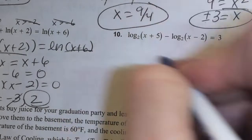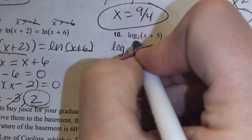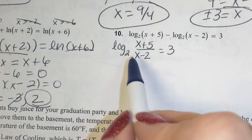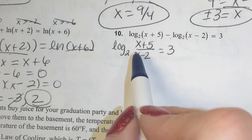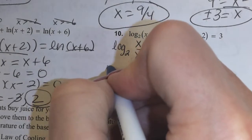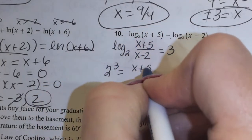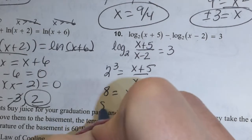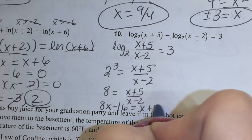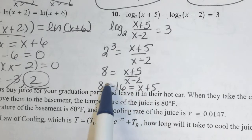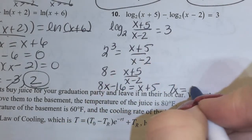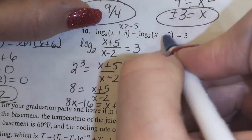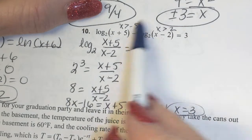On this one, I condense to a single log: log base 2 of (x plus 5) over (x minus 2) equals 3, since subtraction becomes division. Rewriting as an exponential: 2 to the 3rd equals (x plus 5) over (x minus 2), so 8 equals (x plus 5)/(x minus 2). Cross-multiplying: 8x minus 16 equals x plus 5, giving 7x equals 21, so x equals 3. Checking domain: x greater than negative 5 and x greater than 2 — x equals 3 satisfies both, so it's a valid solution.